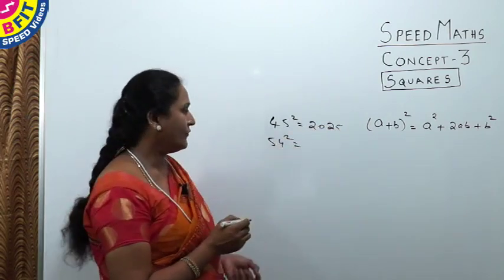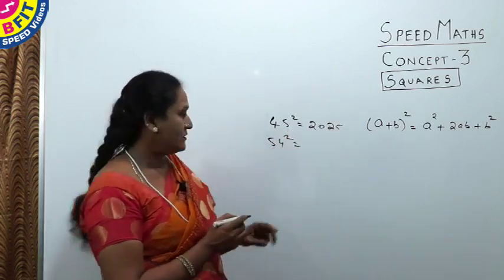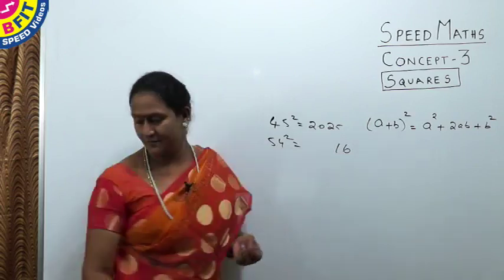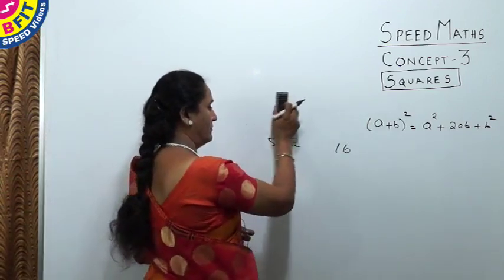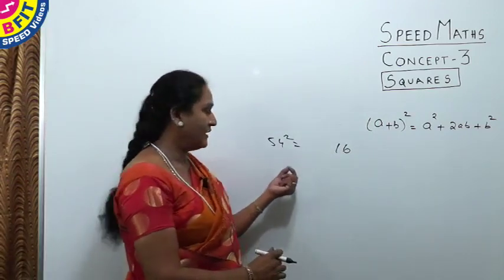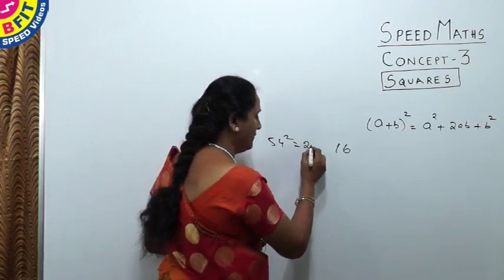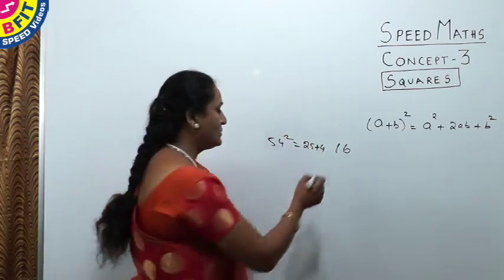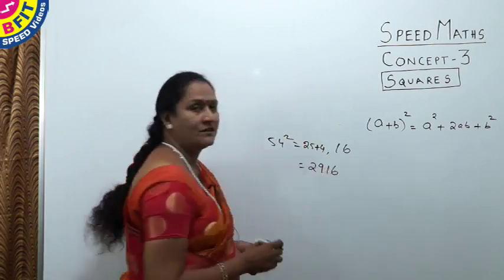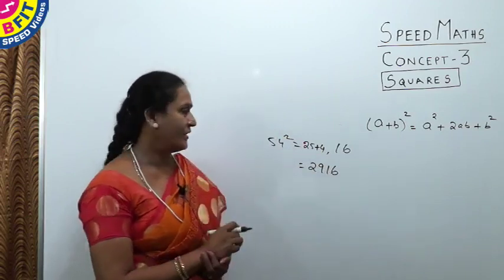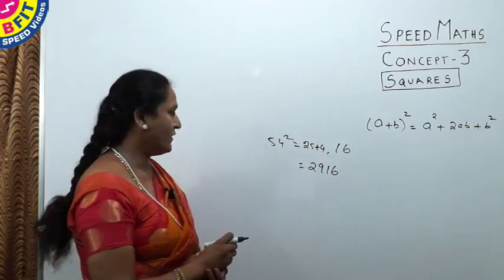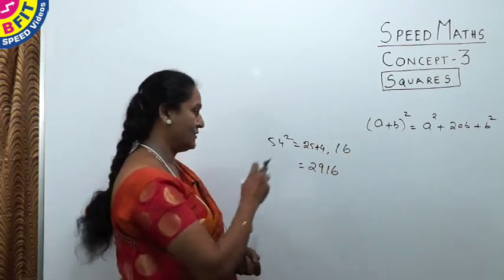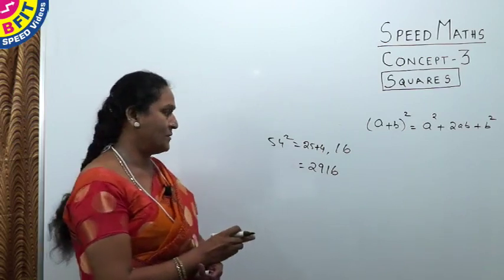Now suppose the number starts with 5, like 54. The unit digit is 4; square it: 4² = 16. For the remaining part, square 5 and add the unit digit: 5² = 25, and 25 + 4 = 29. So 54² = 2916. For a two-digit number starting with 5, square the unit digit and add that digit to 25 for the leading part.